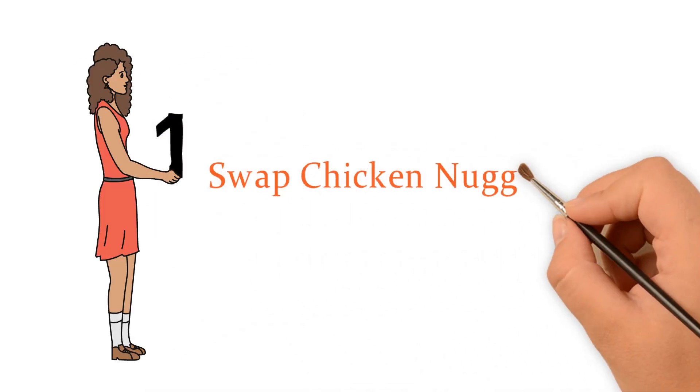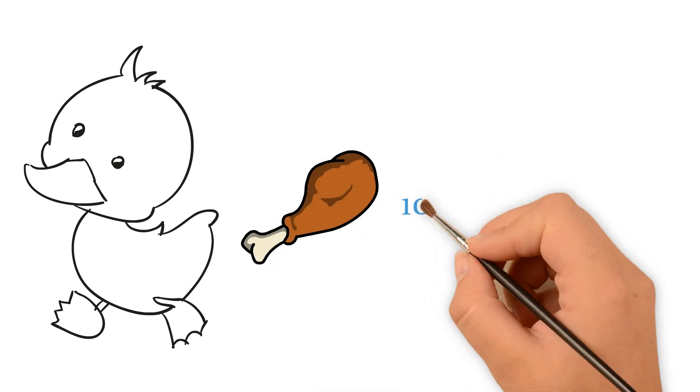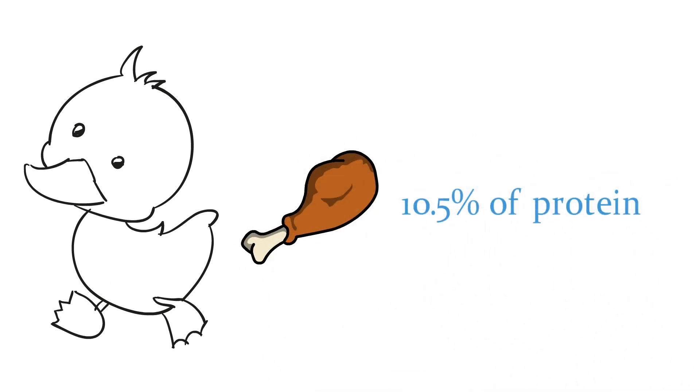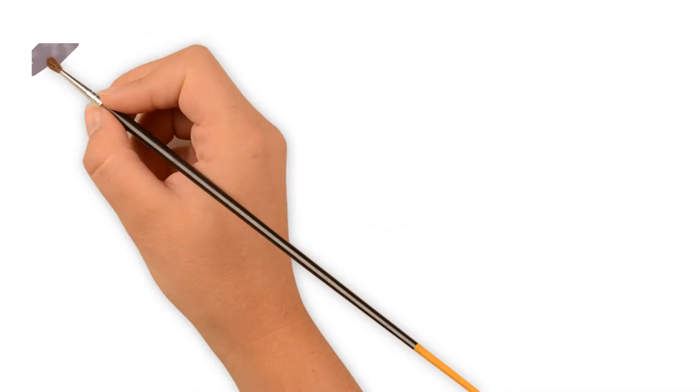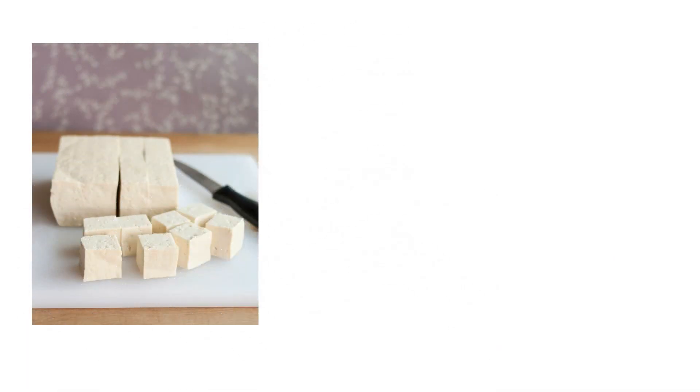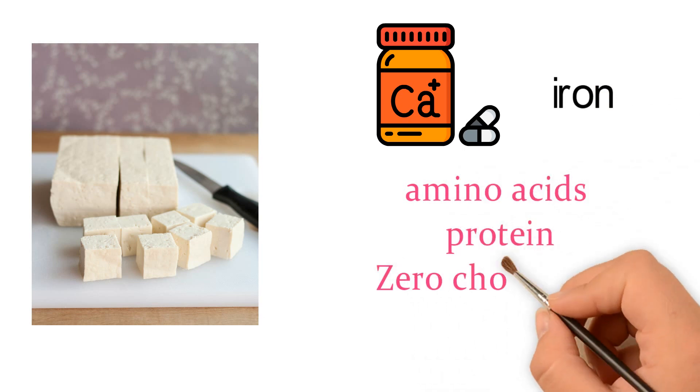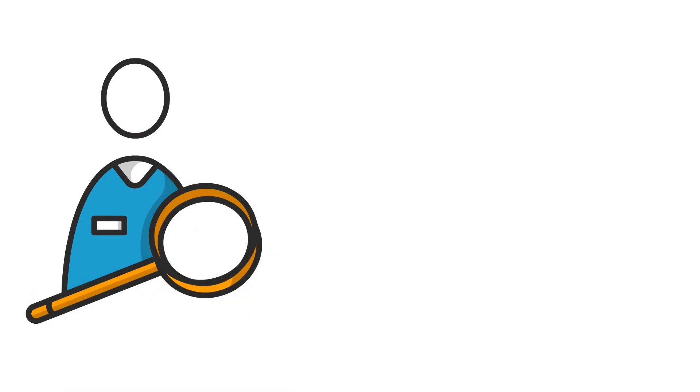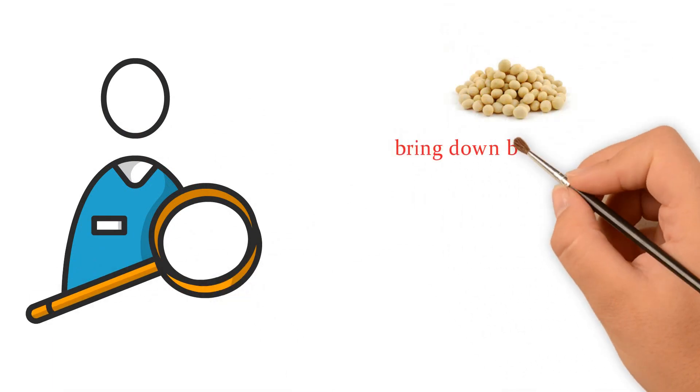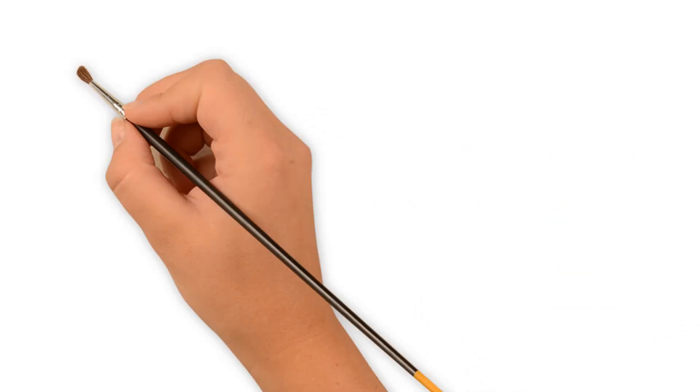1. Swap Chicken Nuggets with Tofu. Chicken nuggets are delicious and contain about 10.5% of protein by weight. However, they also include different kinds of starches, flour, and oils. Tofu, on the other hand, boasts of micronutrients, calcium, iron, amino acids, protein, and zero cholesterol. Moreover, researchers have revealed that dietary soy can bring down bad cholesterol as well as the risk of breast cancer.